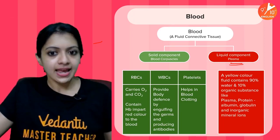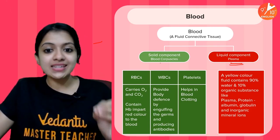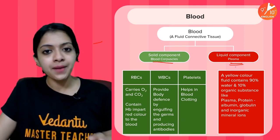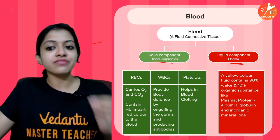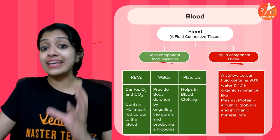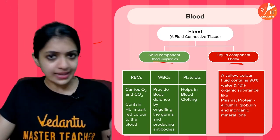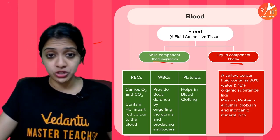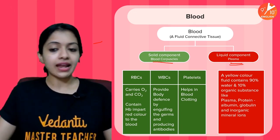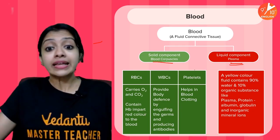The remaining 45 percent is comprised of the blood corpuscles or blood cells. Plasma itself is a pale yellow colored fluid made up of approximately 90 percent water and about 10 percent organic substances like proteins — albumins, globulins, fibrinogens — and also different inorganic mineral ions like calcium and various other mineral ions.